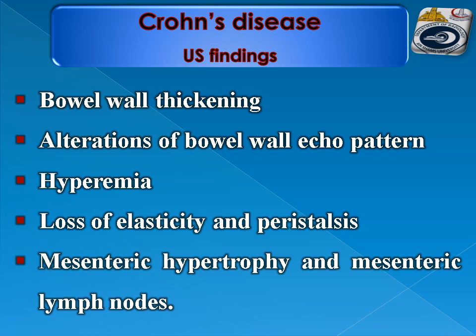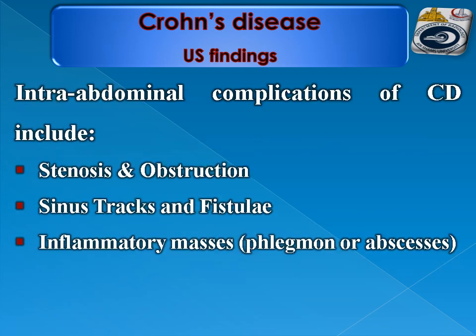Ultrasound findings in Crohn's disease include findings in the intestinal wall: bowel wall thickening, alteration of the bowel wall echo pattern, hyperemia (increased vascularity), loss of elasticity and peristalsis, mesenteric hypertrophy, and mesenteric lymph nodes. Intra-abdominal complications include stenosis, obstruction, sinus tracts, fistulae, and inflammatory masses such as phlegmon or abscess formation.